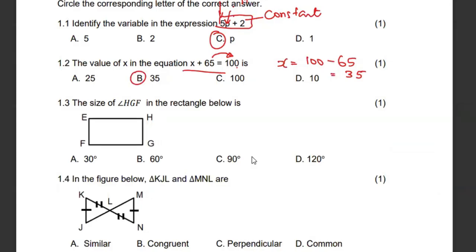Then the size of angle HGF in the rectangle. We know that angles in the rectangle will always be 90 degrees, so this angle G must be 90.